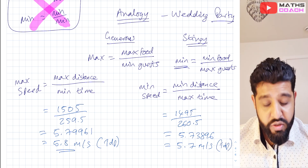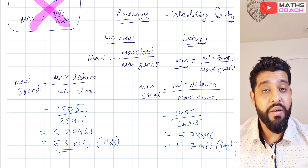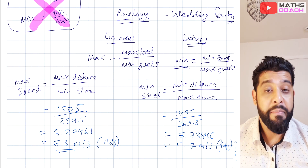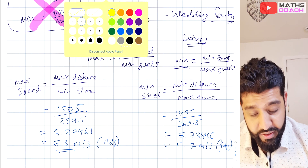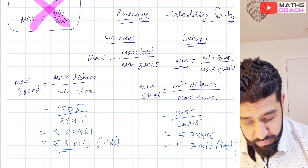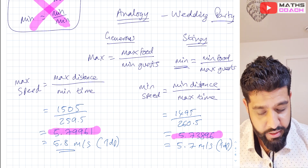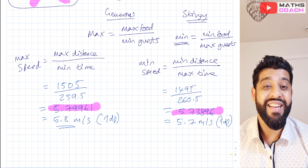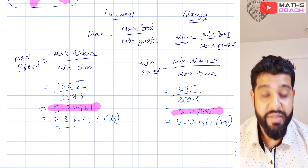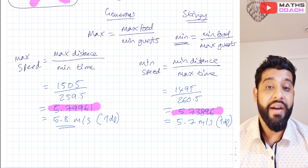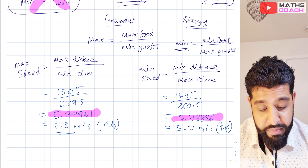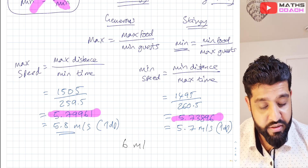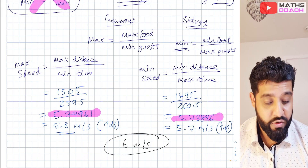Looking at both answers together — as the examiner may ask you to come to a single degree of accuracy — you have to look at both values and ask what they round to. If you round to one significant figure, both 5.8 and 5.7 give us 6 metres per second. So 6 metres per second would be a good final answer overall.